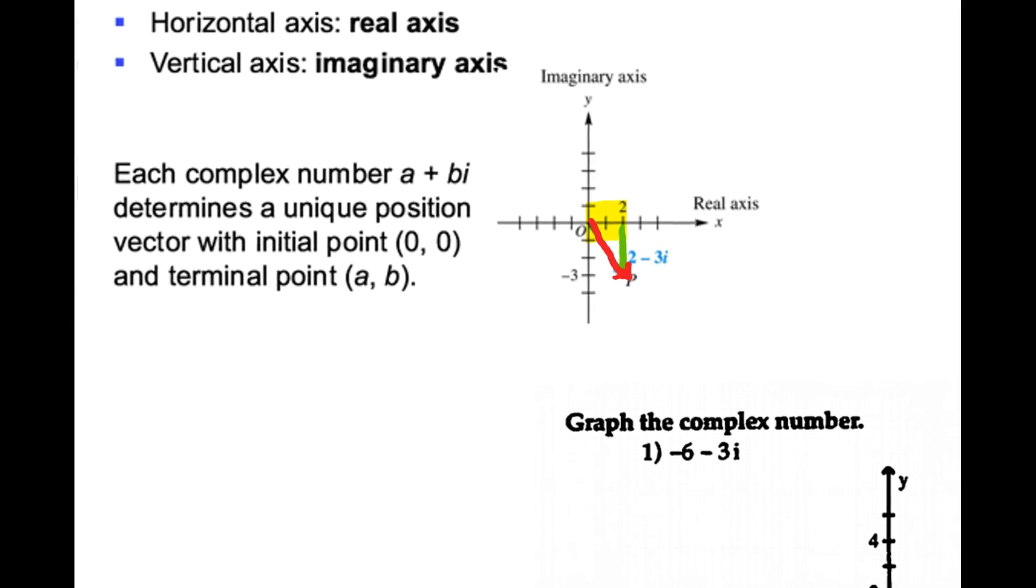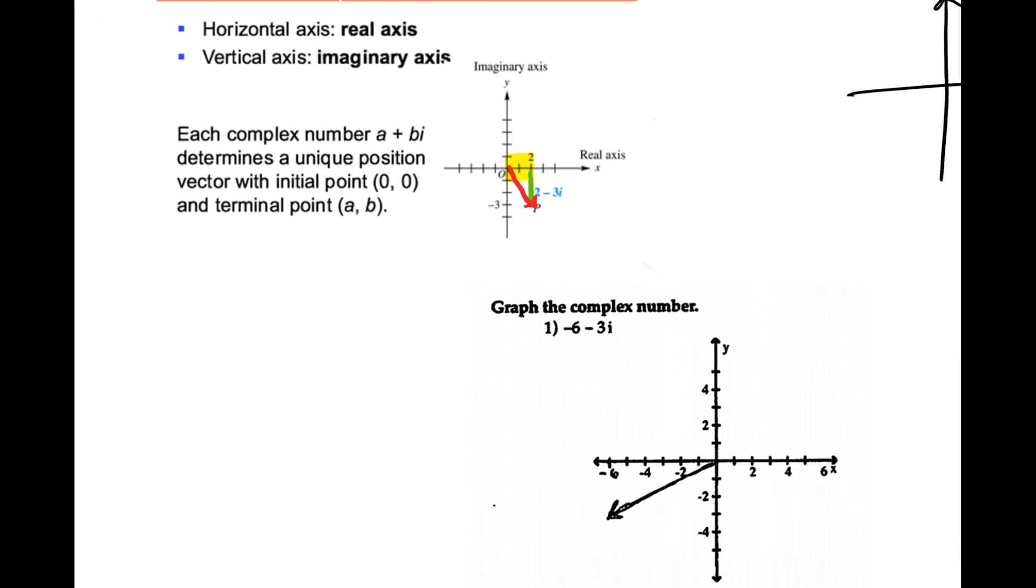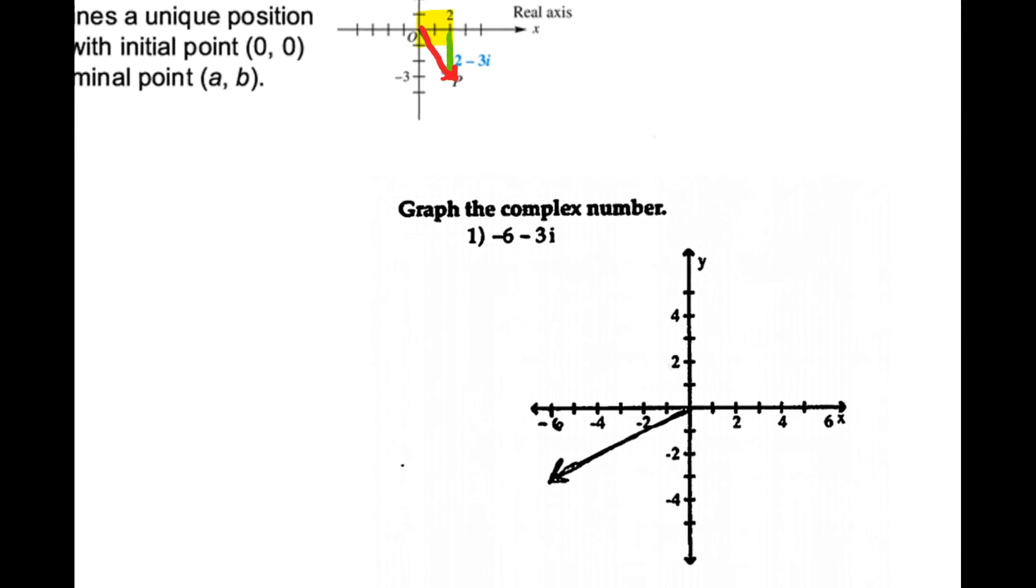Each complex number a plus bi determines a unique position vector with initial point (0, 0), the origin, and terminal point (a, b), where a and b are the components of the complex number.